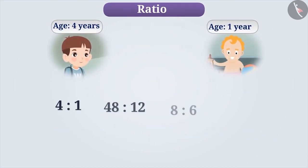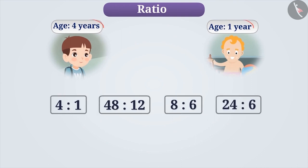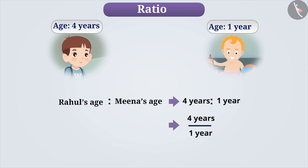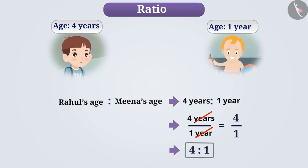Till now we have represented all the ratios without units. The reason is: we can write the ratio of Rahul's age to Meena's age as 4 years is to 1 year, which in fraction form is 4 years by 1 year. Since the units in the numerator and denominator are the same, we can cancel them. We get the fraction 4 by 1, which is without units, represented in ratio form as 4 is to 1. That is why there are no units for any ratio.